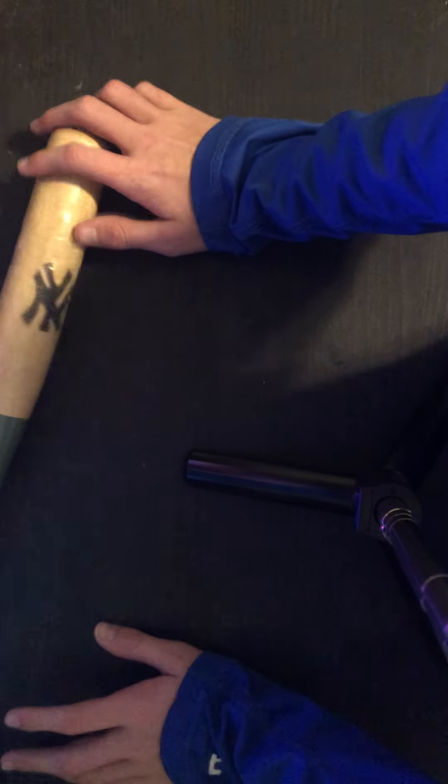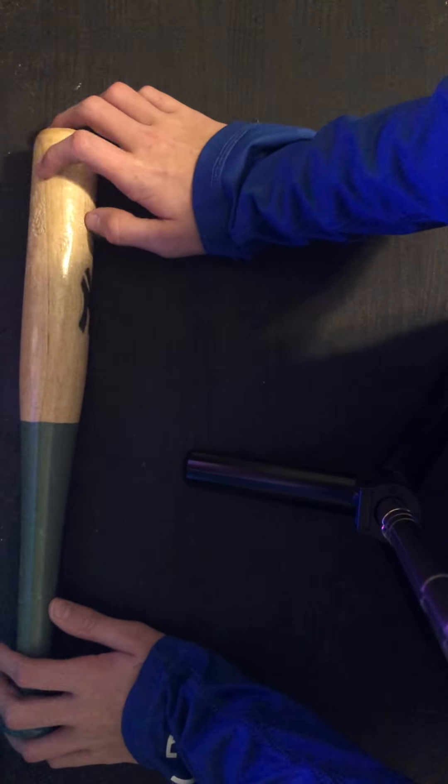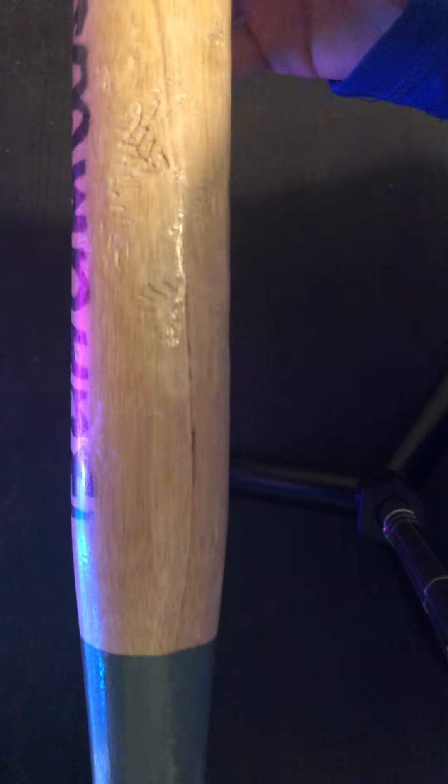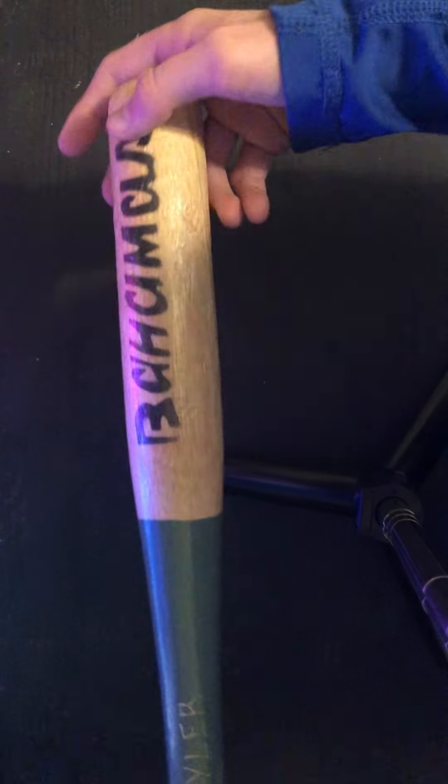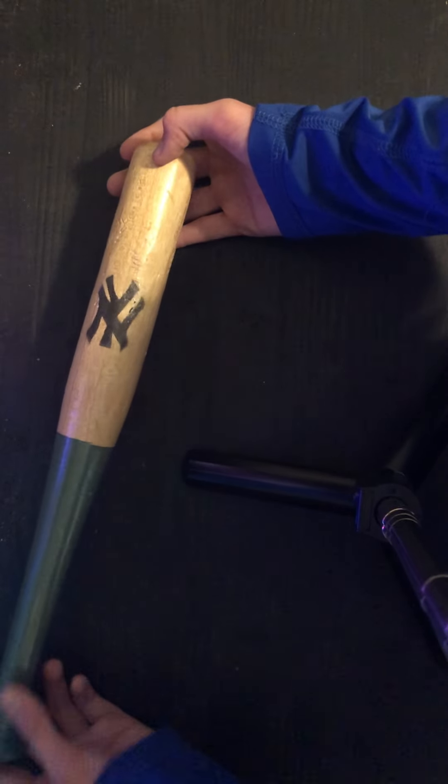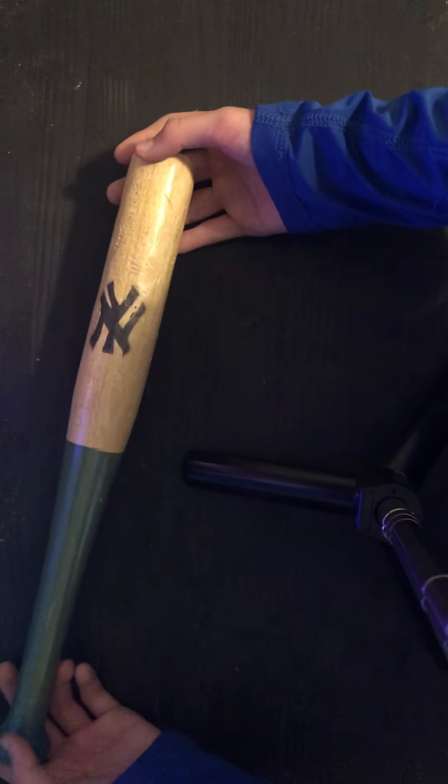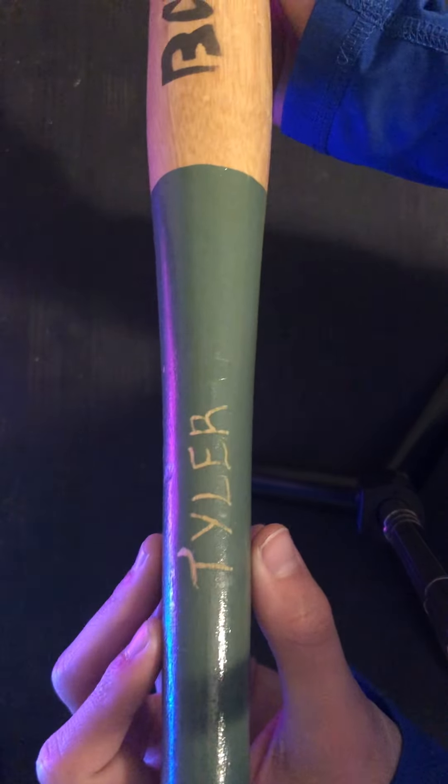The Bahamas bat has my name on it. There was one with the Bahamas only and one with the Yankees only. One had my favorite color blue and another was red, but I decided to get the green because it has both and I got my name carved into it. This one is from the Savannah Bananas.